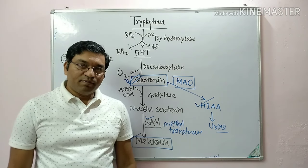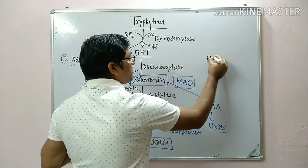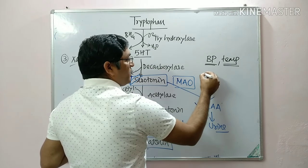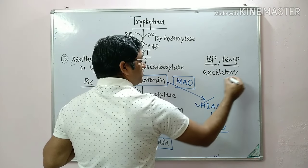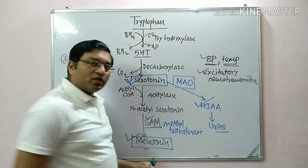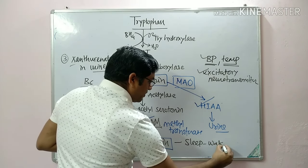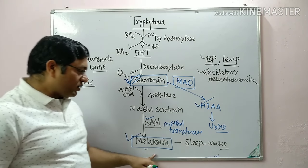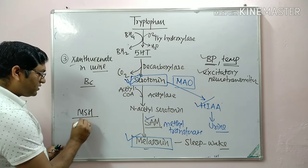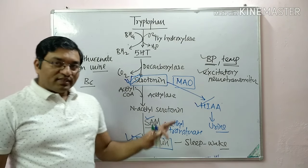Tryptophan generates NAD and NADP, serotonin, and melatonin. Serotonin is responsible for maintenance and regulation of blood pressure, temperature regulation, and acts as a cerebral excitatory neurotransmitter. Melatonin is responsible for the sleep-wake cycle, is synthesized by the pineal gland, and in response to light it decreases production of melanocyte-stimulating hormone and also decreases ACTH production.